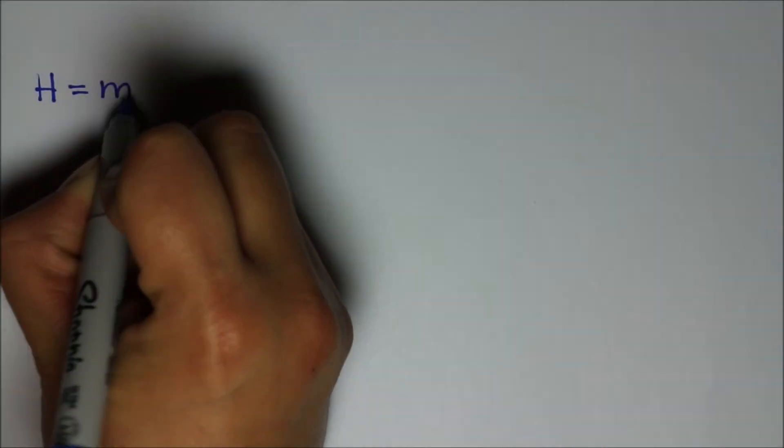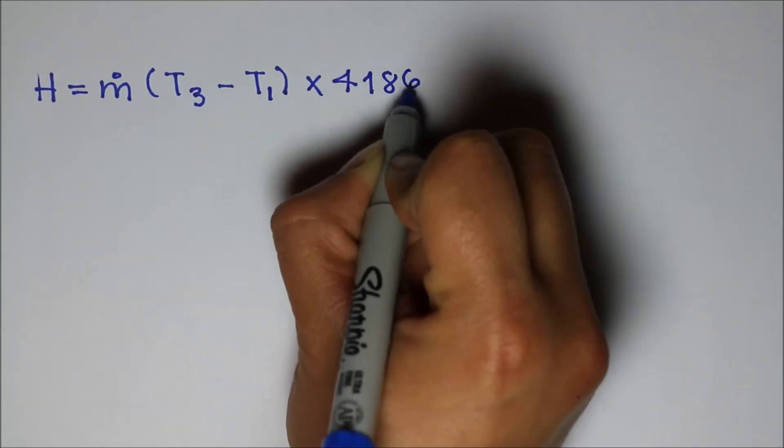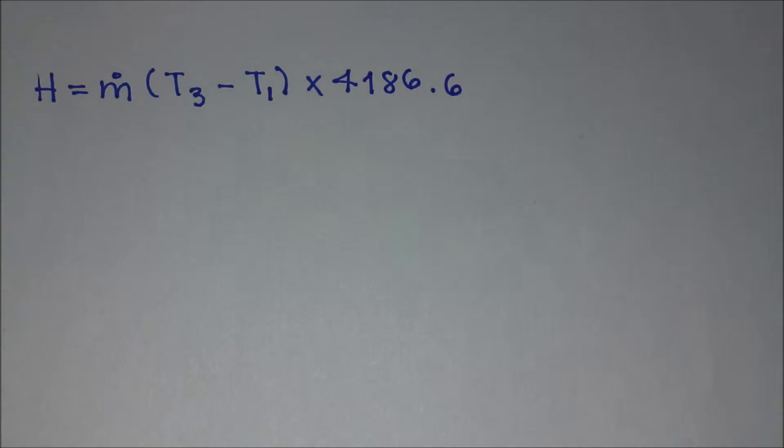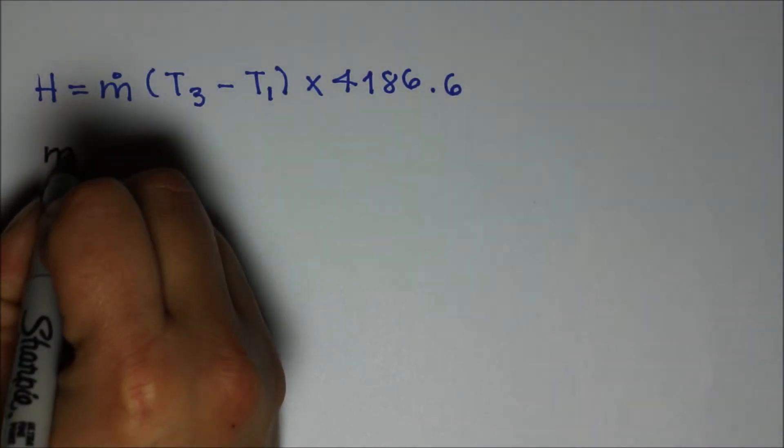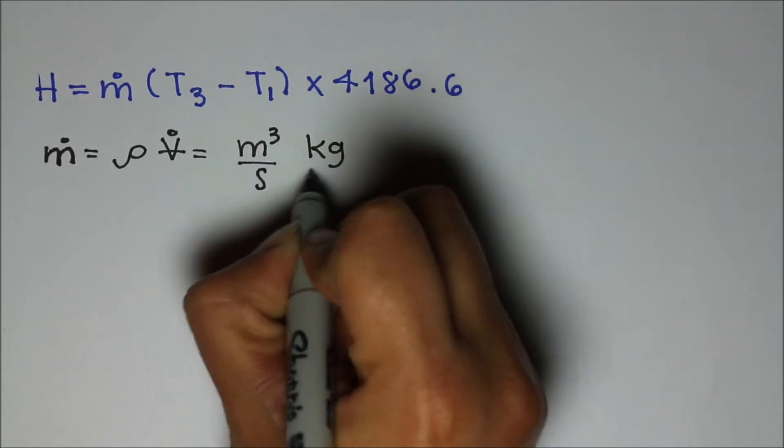The energy absorbed by the water is given by the mass flow rate times the temperature difference times the specific heat capacity of the water. To calculate the mass flow rate, you need to multiply the density times the volumetric flow rate.